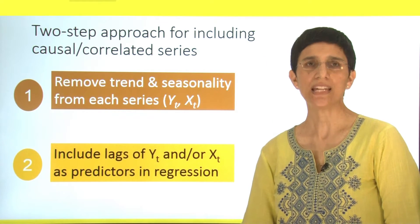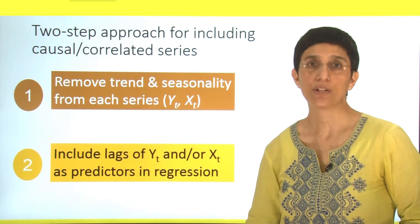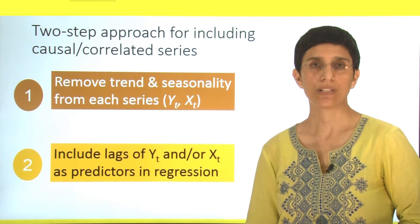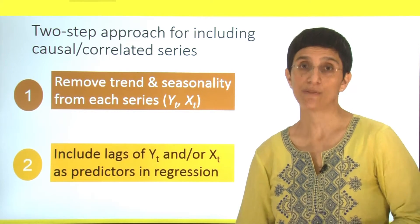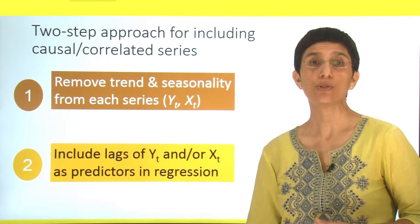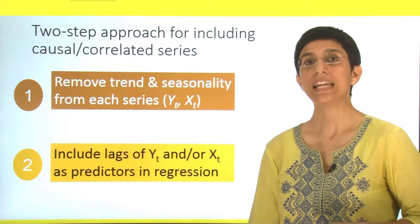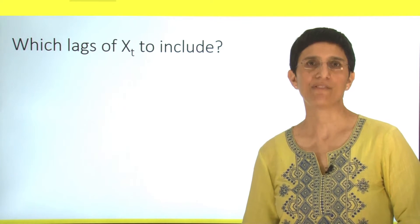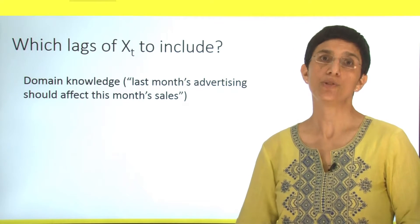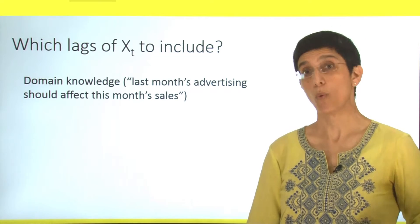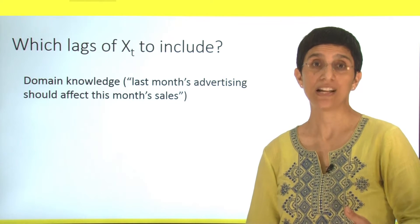A popular approach is a two-step approach to include either a causal or correlated series. In the first step, we take each of our series — both our series of interest and the external series — and remove all possible trends and seasonalities. They might have different trends and different seasonalities, so we make sure we remove all of those ahead of time. Only after we do that do we include lags of our series and possibly the external series as predictors in our regression model. Which lags of the external series to use is an important question. For example, if you know that advertising should have a one-month-ahead effect, then include lag one of advertising in your sales model.